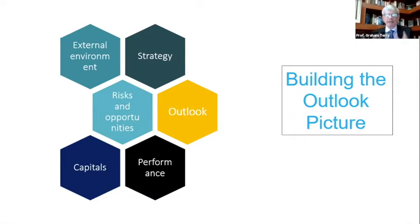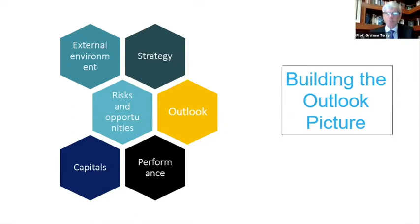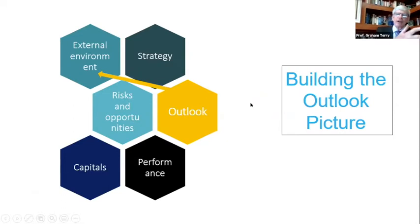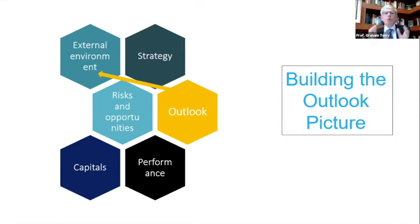Outlook is one of the content elements, but very often you don't find a separate Outlook section in the report. Why is that? Because it's integrated into all the other sections of the report. They begin with the external environment — looking at those issues, might be economic, social, technology — all of those issues in the short, medium and long term. So they start to build their Outlook picture from the external environment. Flowing from that, they create their strategy, also short, medium and long term.